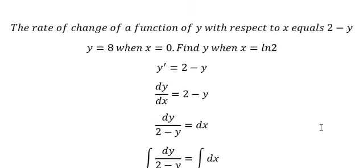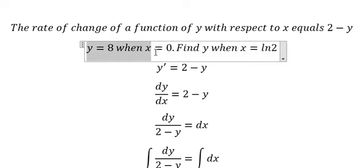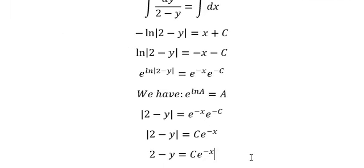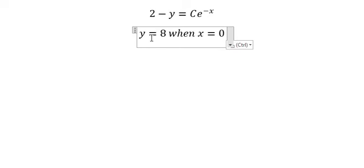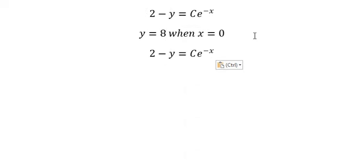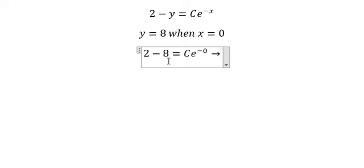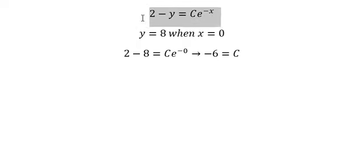Now we have conditions. When y equals 8 and x equals 0, we substitute. 2 minus 8 gives us negative 6. On the right side, that's 1. So c equals negative 6.